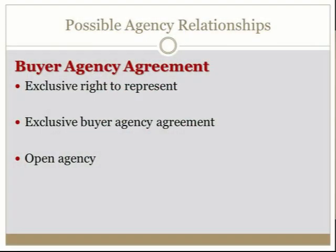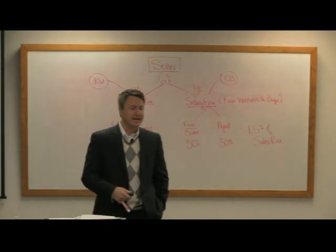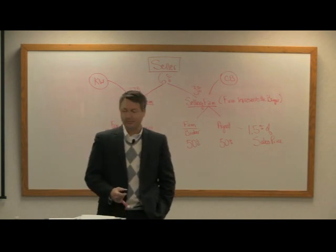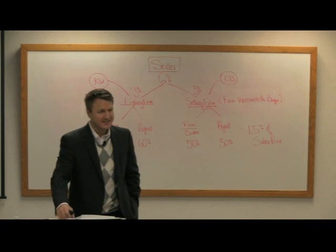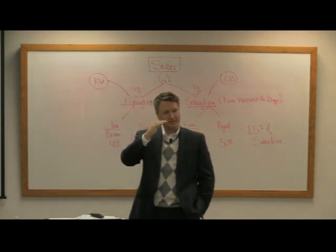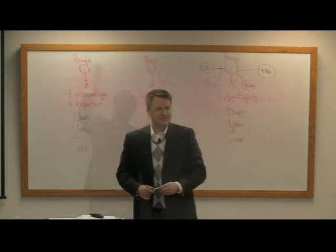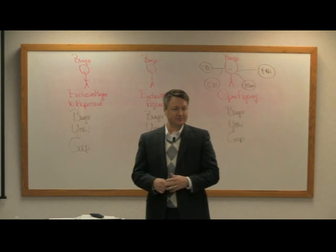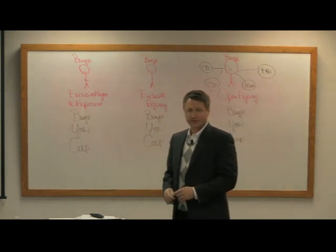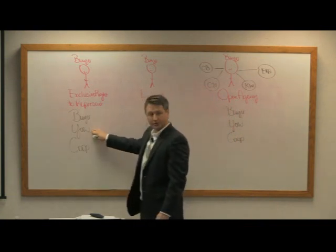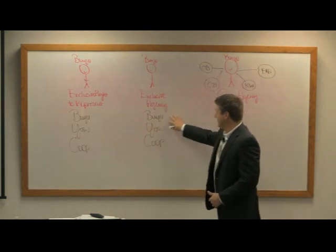Some possible agency relationships with the buyer — we'll look at these with sellers in chapters 8 and 9 since they have the exact same flowchart. With the buyer, the first is the exclusive right to represent, then exclusive buyer agency, which is similar in verbiage but a bit different when broken down, and then open agency. Up on the board I have listed those three different agencies: exclusive right to represent, exclusive agency, and open agency, with the buyer, you as the agent, and a cooperating broker shown below all three.